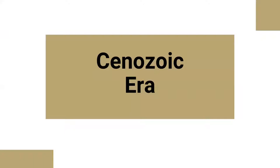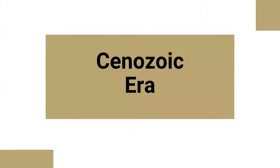Moving on to the Cenozoic era — which is actually where we are in history now. This is where you'll find more of the larger mammals and animals you may have seen at the University State Museum. Right now, about 55.8 to 65.5 million years ago, Earth's climate was pretty warm with very small polar ice sheets, high sea levels, and Nebraska was very warm and humid.